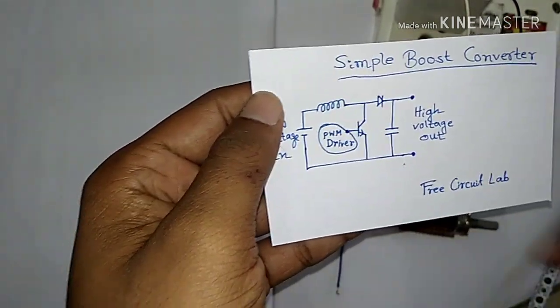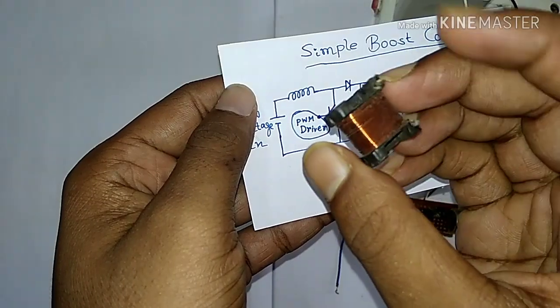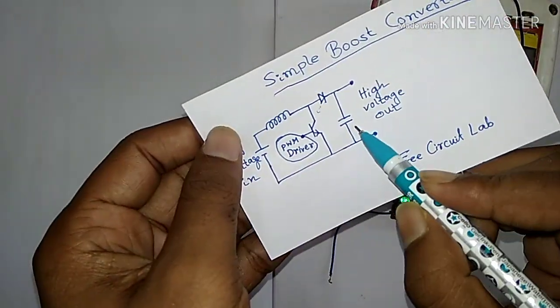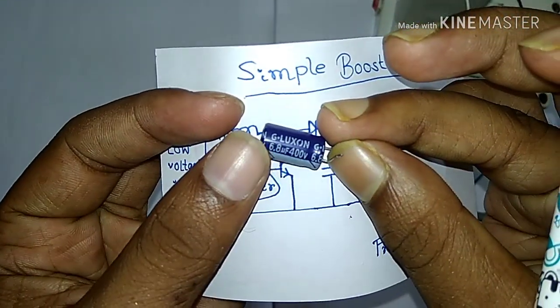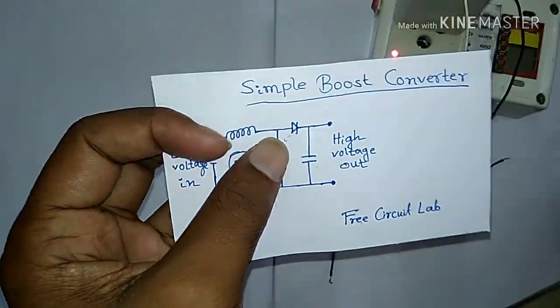According to the schematic, we have this coil as an inductor and this diode and this capacitor. It's a 400V 6.8 microfarad capacitor, so let's build the circuit.